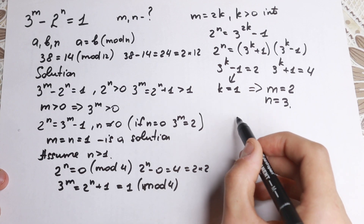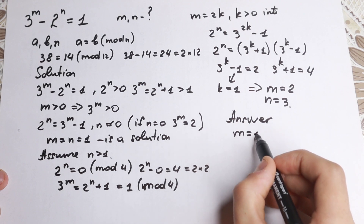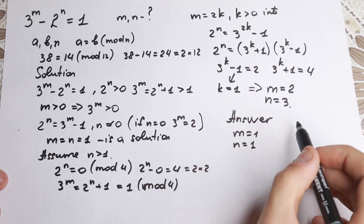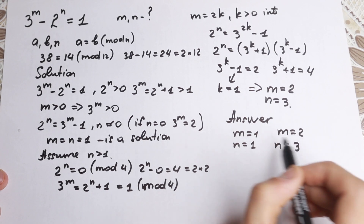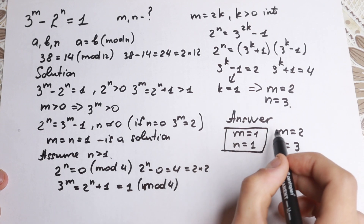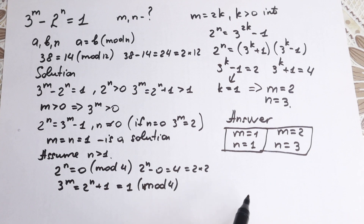A lot of students solve it by inspection and say the answer is m equal to 1 and n equal to 1, but there is also the solution m equal to 2 and n equal to 3. I know the explanation is a little bit complicated, but this is modular arithmetic and we need to know about it. I hope you understand this step. If you don't understand, write a question in the comments — I'll try to help everyone. Thank you for watching, see you in the next video!